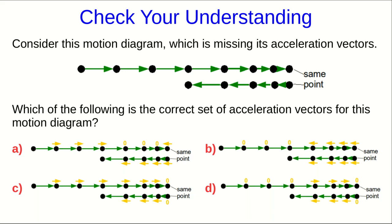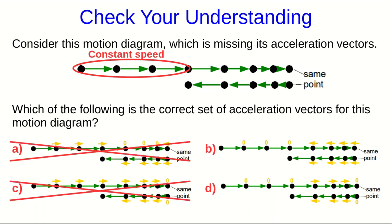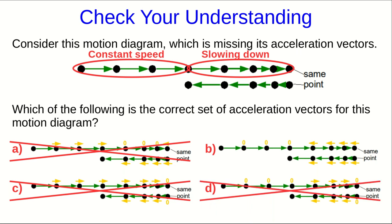Here is the question that I ended the previous part of this video lecture with, and let's go through the reasoning. The first part of the motion is at constant speed, so the acceleration there should be 0, and that eliminates A and C. In the next part, it's slowing down, and so the acceleration should point opposite to the direction of motion, and so that eliminates D, and the answer must be B.